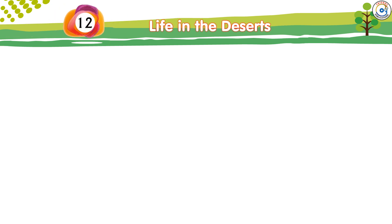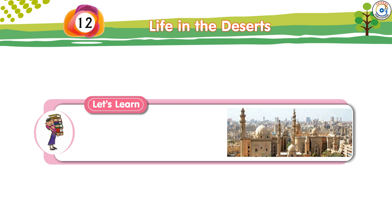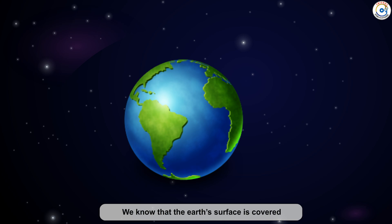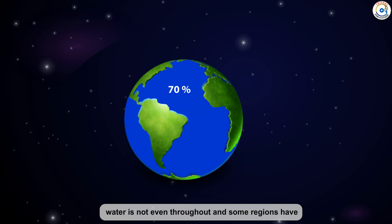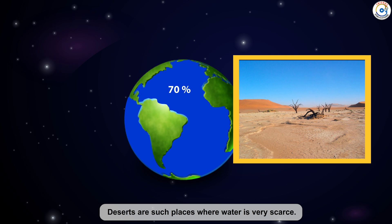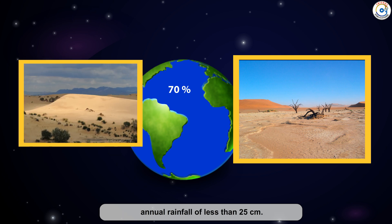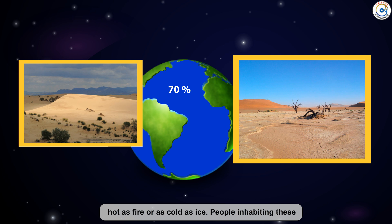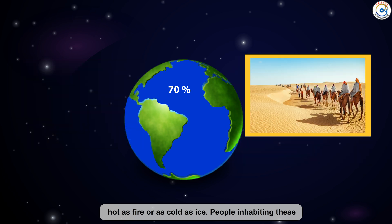Chapter 12: Life in the Deserts. We know that the earth's surface is covered two-thirds with water. However, the distribution of water is not even throughout, and some regions have enough water while some have scarcity of water. Deserts are such places where water is very scarce. There are barren lands with sparse vegetation and an annual rainfall of less than 25 cm. They have extreme temperatures — it may be as hot as fire or as cold as ice. People inhabiting these areas have to adapt themselves to these extreme climatic conditions.